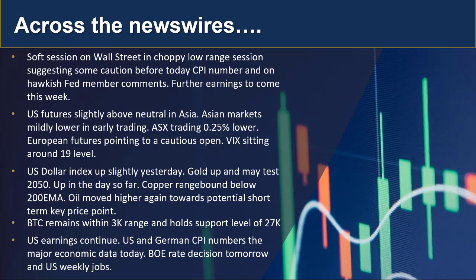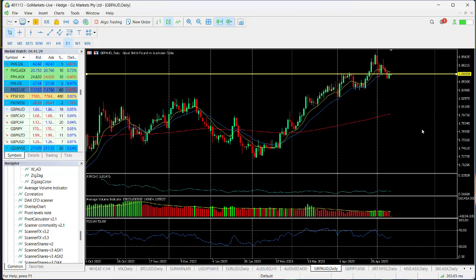In the crypto space, Bitcoin is holding support at 27,000 and remains within a 3,000 range at this stage. US earnings continue today, and market thinking will be dominated by CPI numbers, particularly out of the US but also Germany this afternoon, so we'll expect some movement in the euro later today. Bear in mind that there is big data out over the next couple of days — we've got the BOE rate decision tomorrow and US weekly jobs also due.